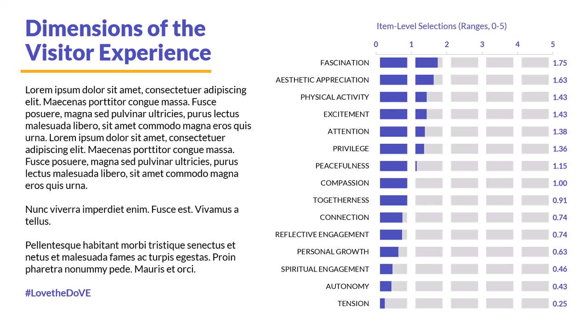Visitors are asked to reflect on an experience and select all the words or phrases they believe they experienced during that particular visit or program. Each of those 75 words or phrases has been grouped or factored into 15 different specific dimensions of the visitor experience. Each of those 15 dimensions includes up to five words — for example, fascination, aesthetic appreciation, all the way down to tension. The instrument is randomized, so the words are just randomly sorted on the page.